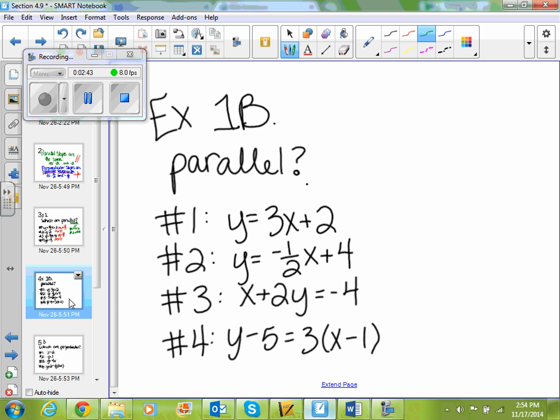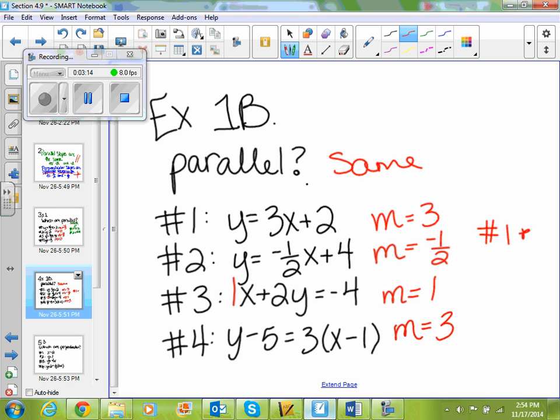So let's do another one. So we're looking for parallels. We're looking through the ones that are the same. So this one is just three or three. Negative one-half. What number is in front of my x? One. One. So this is like one. And then what about this one? Three. Very good. The number in front of your x. So then the ones that are the same are one and four. So lines number one and lines number four are parallel.